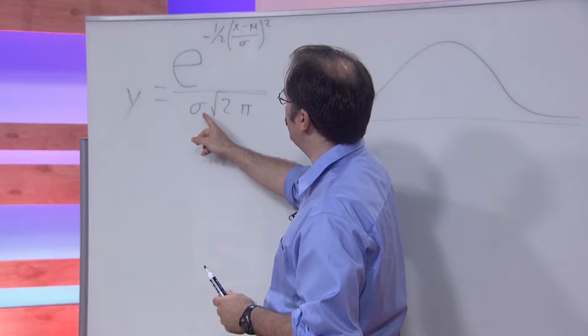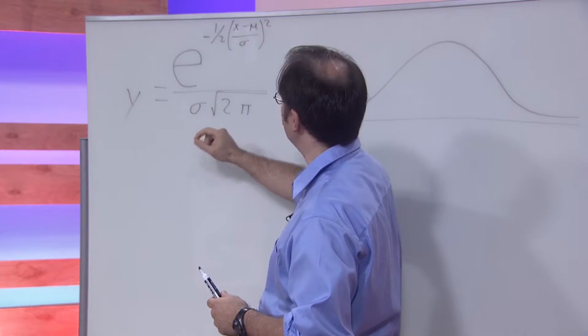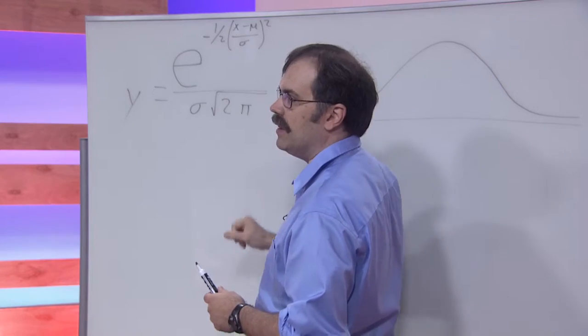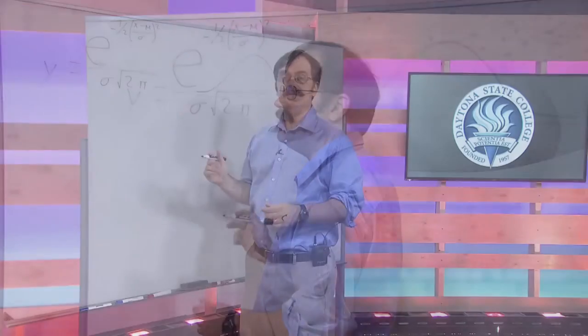First of all, this sigma, that's the population standard deviation. This mu, that's the population mean.